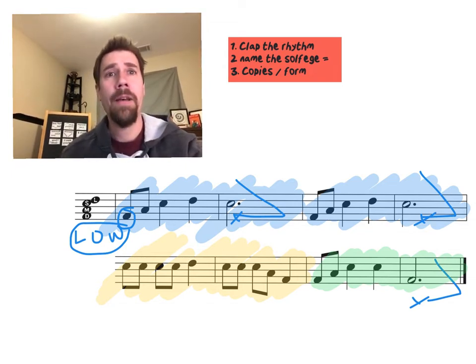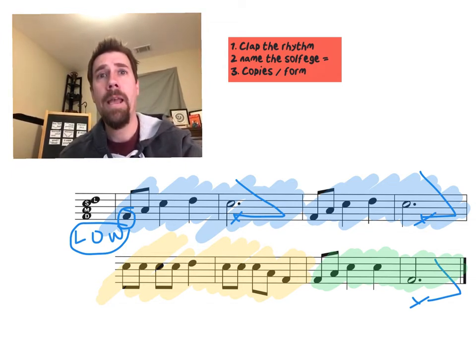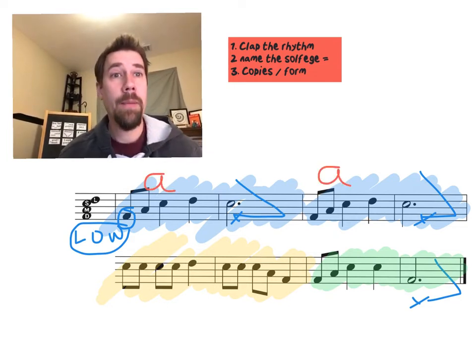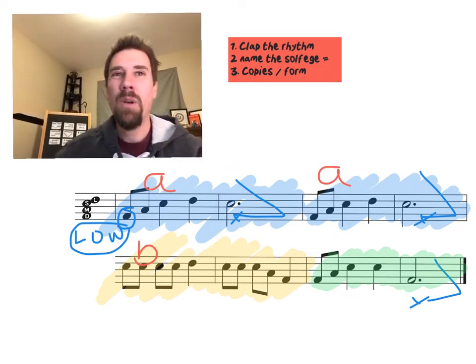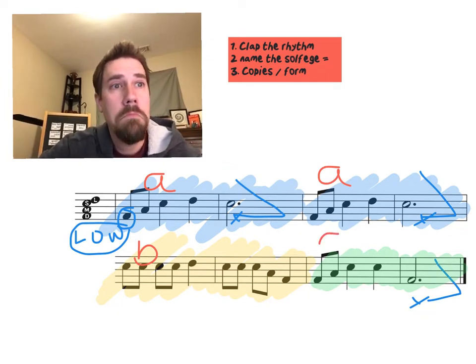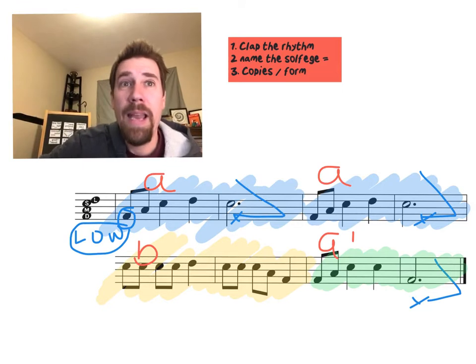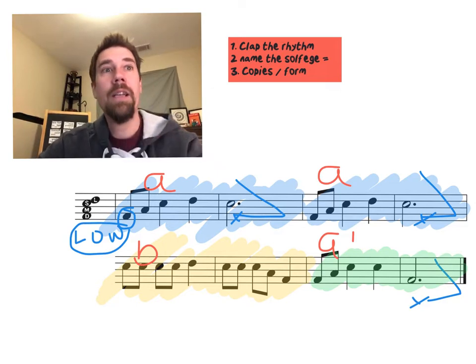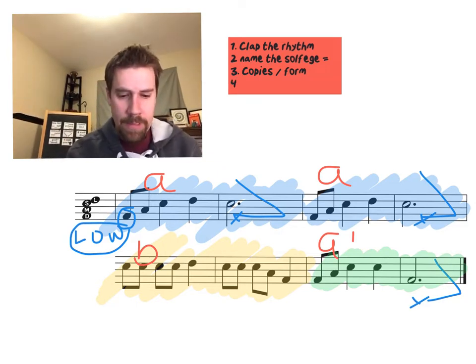So our form would be what? Let's talk about that. We have A. A definitely copies. B. What are we going to call that green part? Because it's not totally different. We could call it C. I'm going to call it A1. Just to make it a little bit the same as the A. Let's take a look at our fourth step.